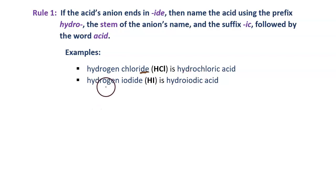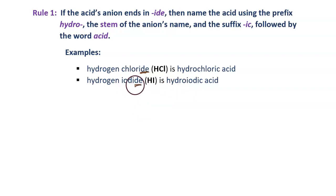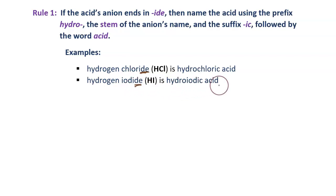Next, hydrogen iodide, or HI. Because the anion ends in "-ide", the name of the acid starts with hydro. Then take the stem from the word iodide, which is the "iode" part, and then end in "-ic". The word becomes hydroiodic acid.